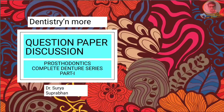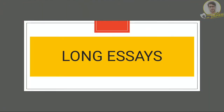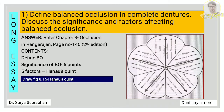Here we go to the first section of the complete denture series. The first long essay question is: define balanced occlusion in complete denture, discuss the significance and factors affecting balanced occlusion. For this you have to refer chapter 8, occlusion, in Rangarajan, page number 146.